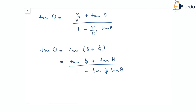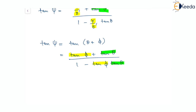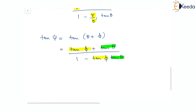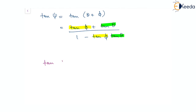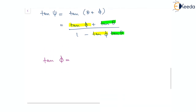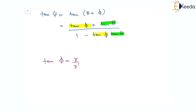Comparing the two expressions for tan(ψ), we can clearly see that tan(φ) equals R/R'. We can cross-check this: tan(φ) corresponds to R/R', and tan(θ) is already present in both expressions. Since R' was defined as dR/dθ from the polar curve, we conclude that tan(φ) equals R divided by (dR/dθ).